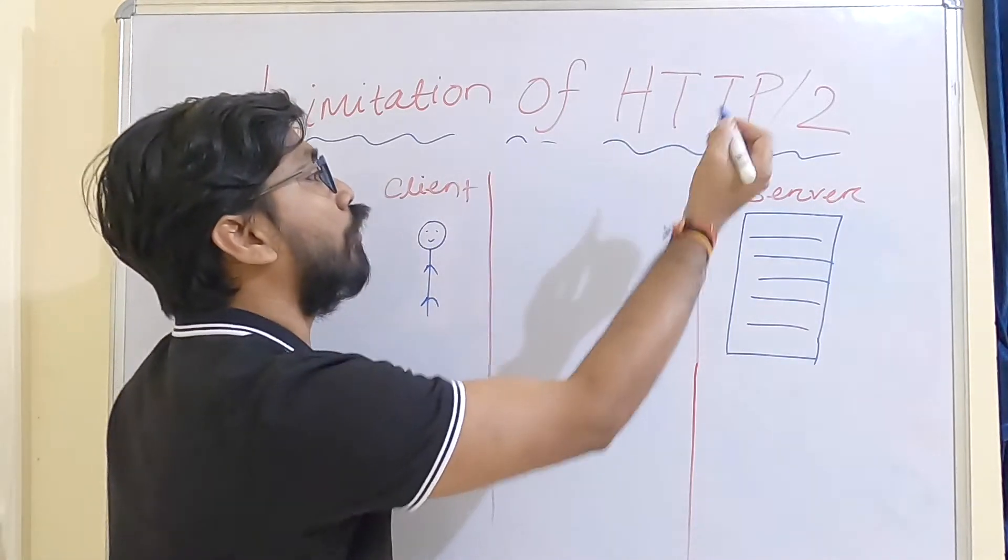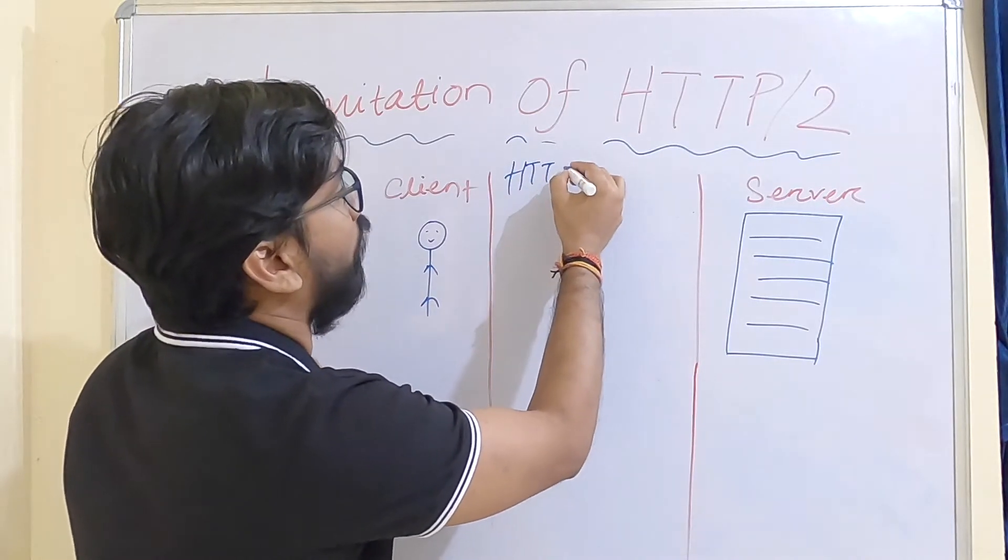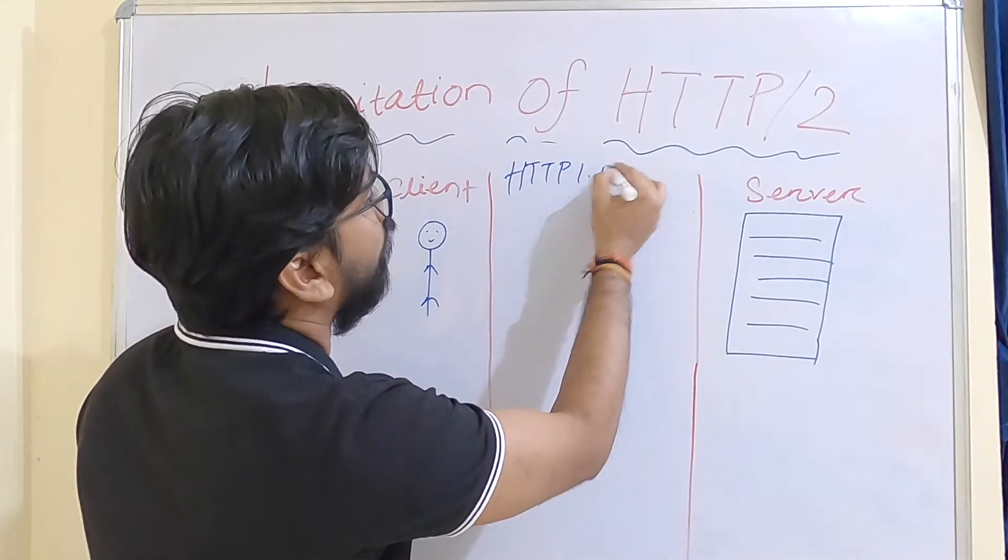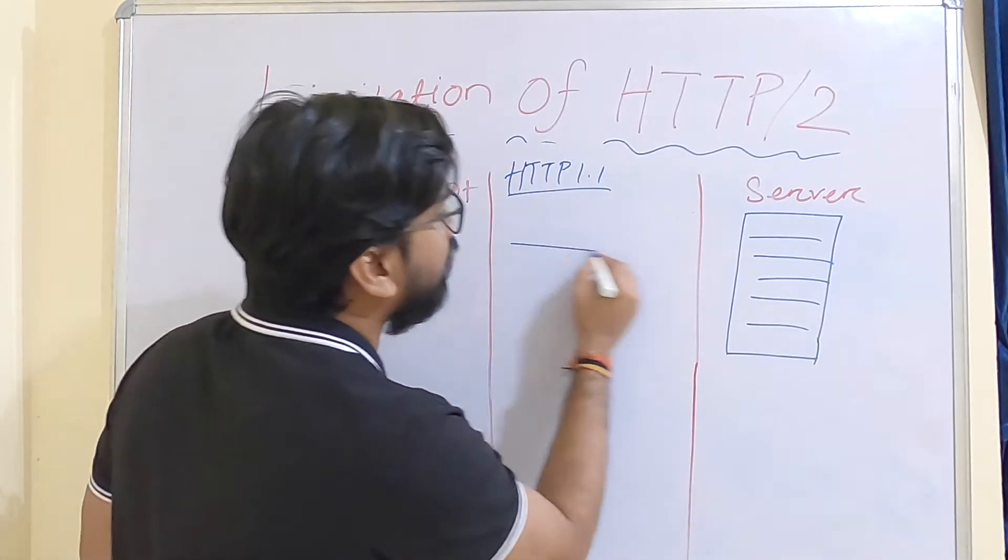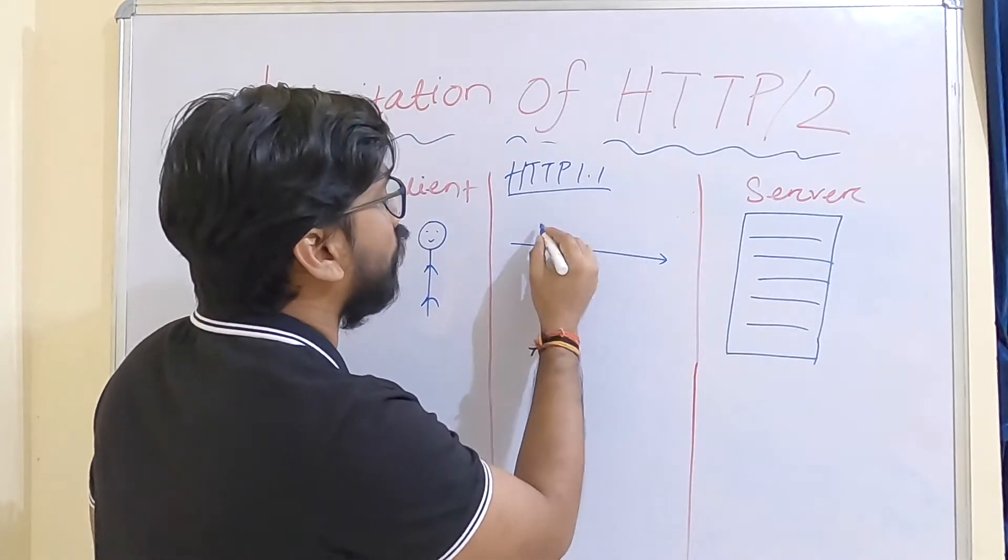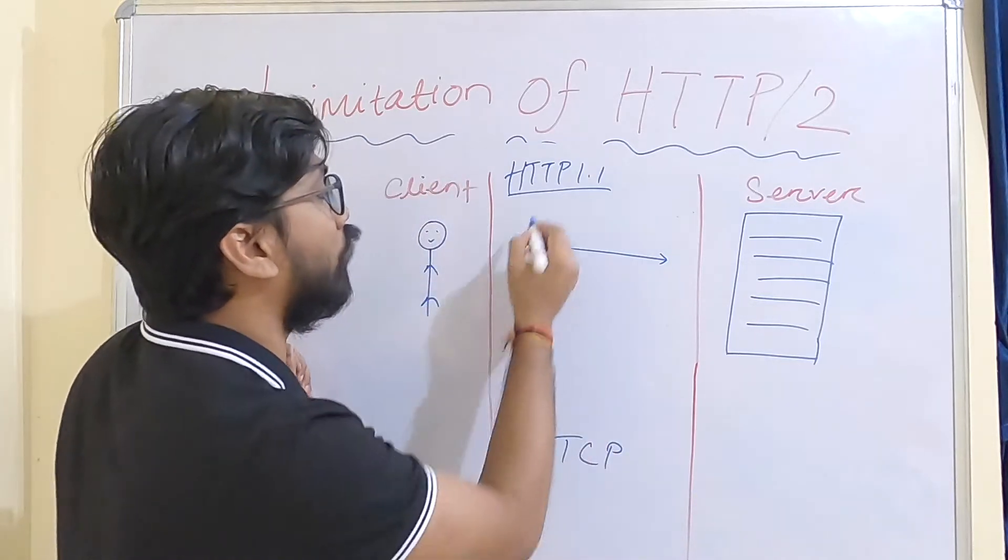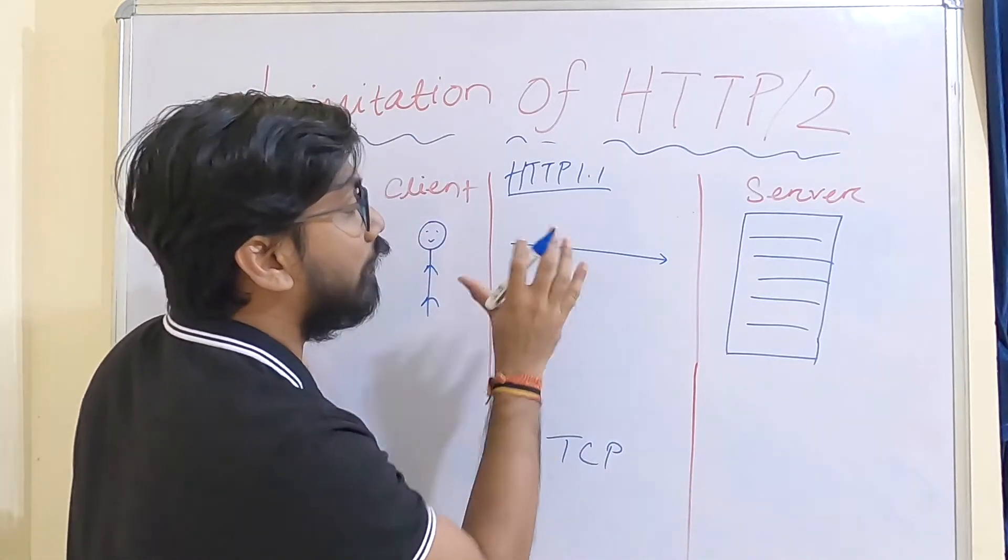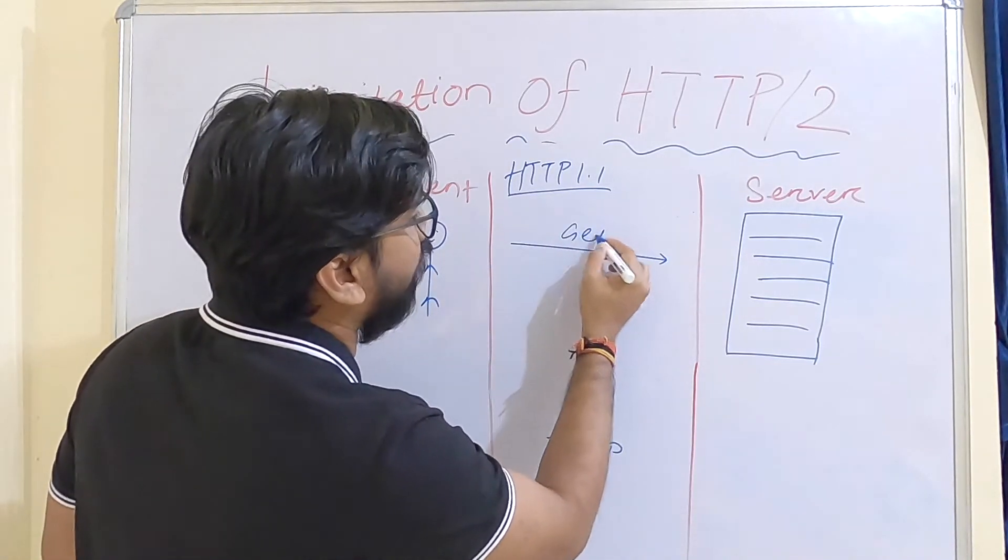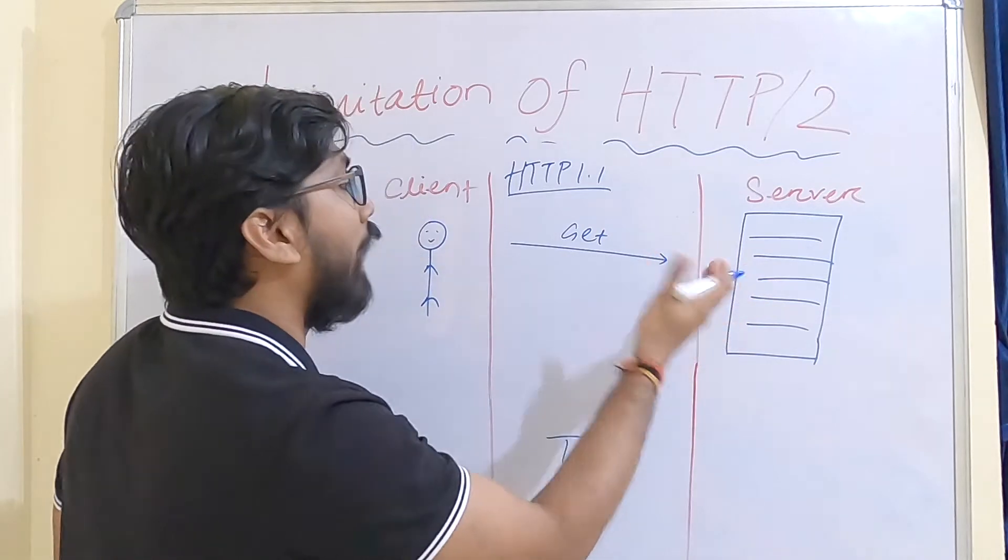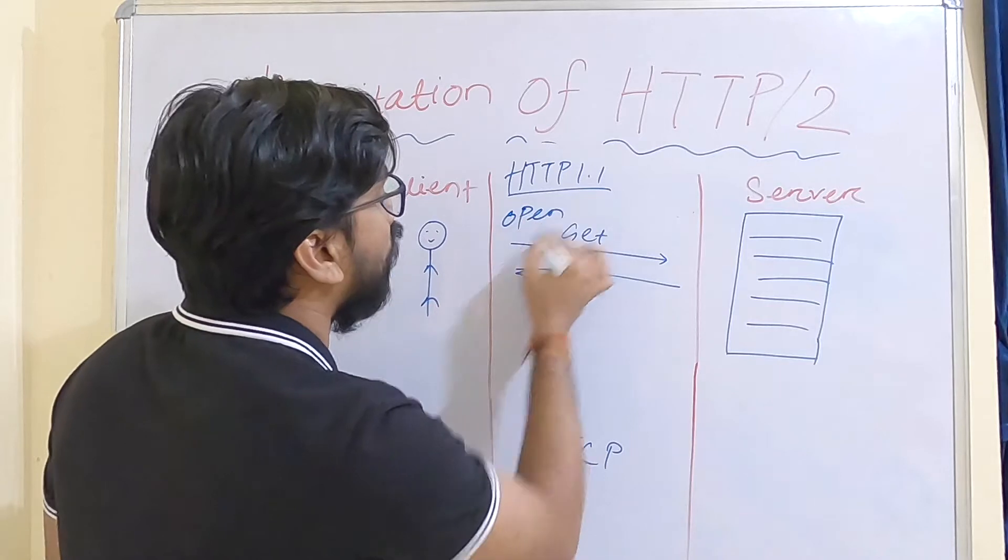Before discussing HTTP/2 limitations, let me tell you how HTTP/1.1 was working. In HTTP/1.1, we could make only a single request at a time. This is the TCP connection - in a single connection we are able to send a single request. This is the get method - you send a request and get the response. This is how the connection is opened and closed.